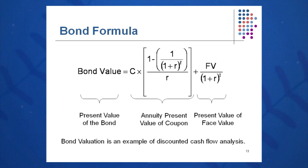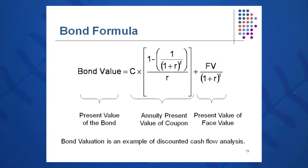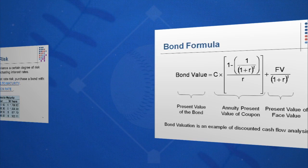One formula here that we're involved with for bonds: the present value or price of the bond today is equal to C times (1 minus 1 over (1 plus R) to the T), all that over R, plus face value over (1 plus R) to the T. Again, we're discounting cash flows here.